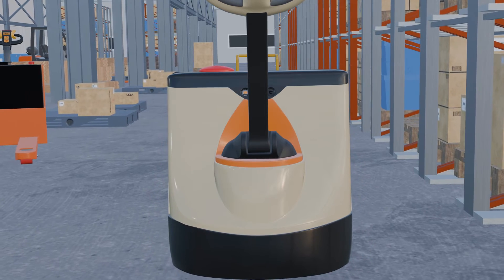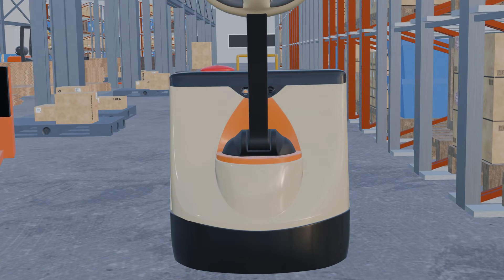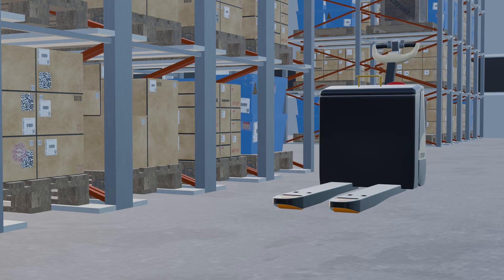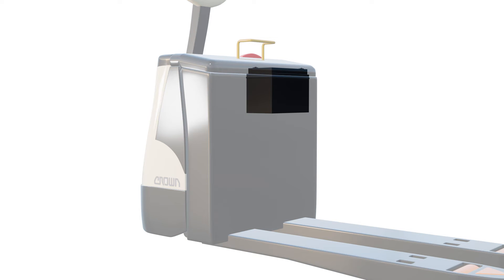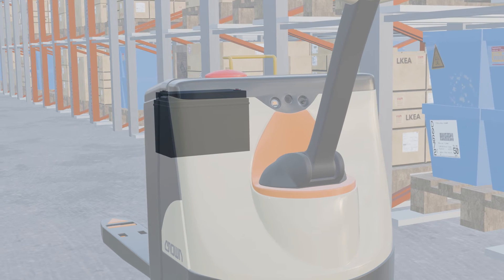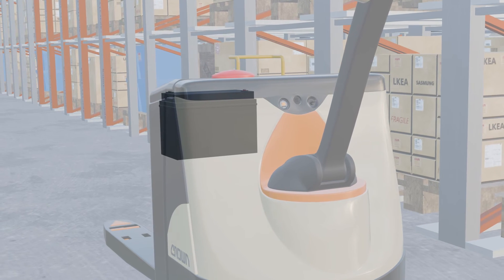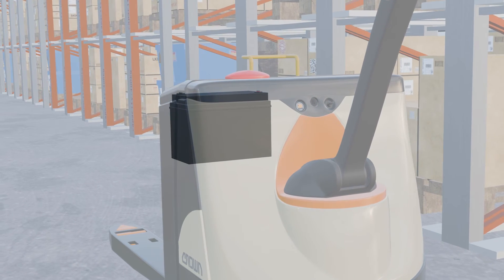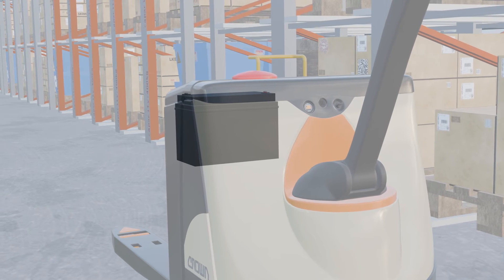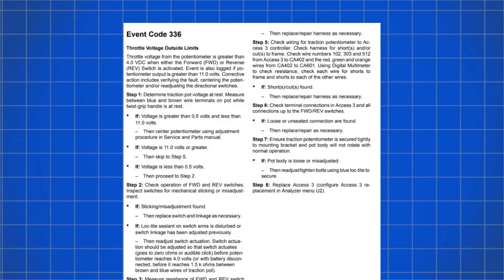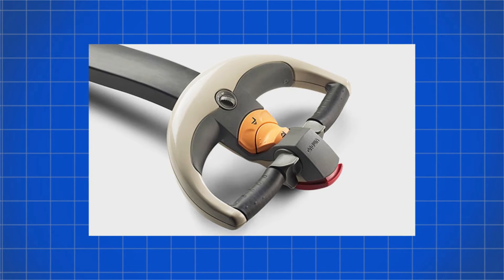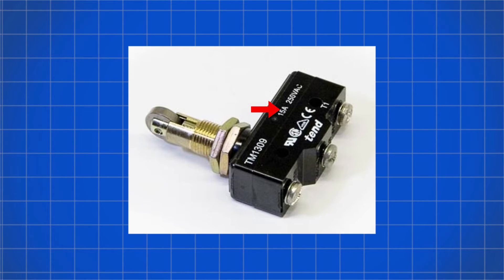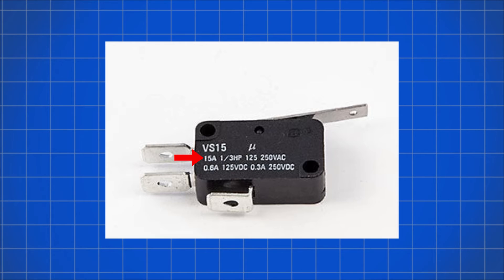If error code 856 is still lingering, you may need to delve deeper into the control handle or consult with a technician for further assistance. If you're seeing error code 857, your battery might be defective — low power causes issues with the electromagnet brake and traction motor, leading to chattering. Check your battery for defects or low charge. Error code 336 signals that the throttle voltage exceeded the limits. Inspect the speed pot in the tiller handle, as resistance in the switch can trigger the code. Opt for a 15-ampere switch for improved performance over the factory's 10-ampere ones, and ensure compatibility for seamless operation.